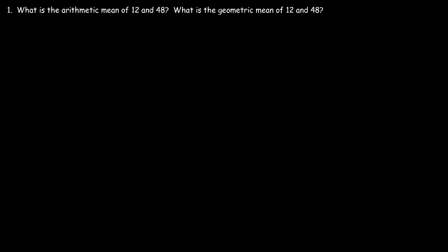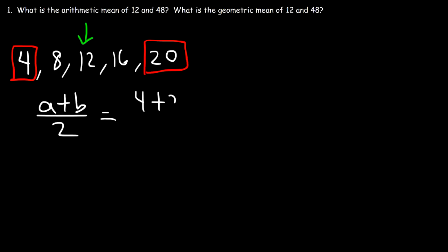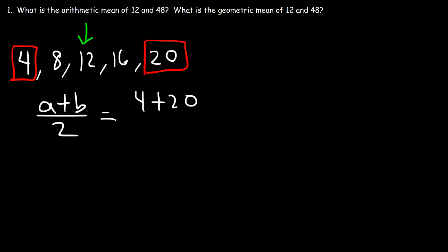Let's say we have an arithmetic sequence with a common difference of 4. The first term is 4, the second is 8, then 12, 16, and 20 — you just add 4 to get the next number. The arithmetic mean of 4 and 20 is the number in the middle, which is 12. To calculate it, you add the two numbers and divide by 2: 4 plus 20 divided by 2 is 24 over 2, which is 12.